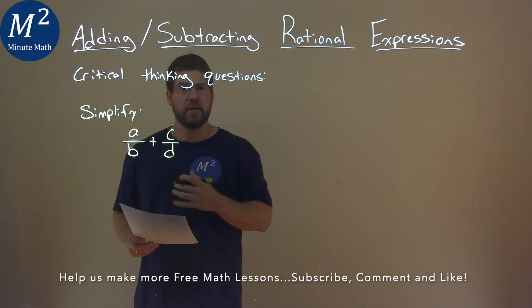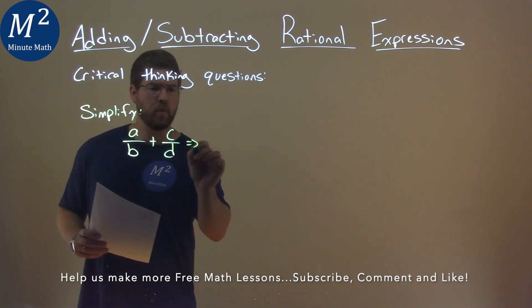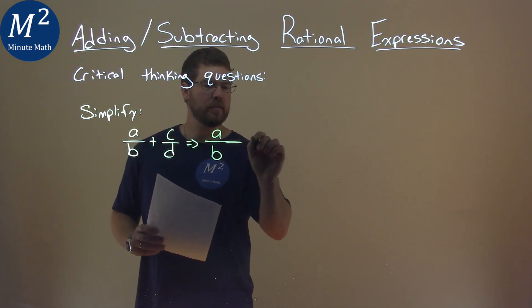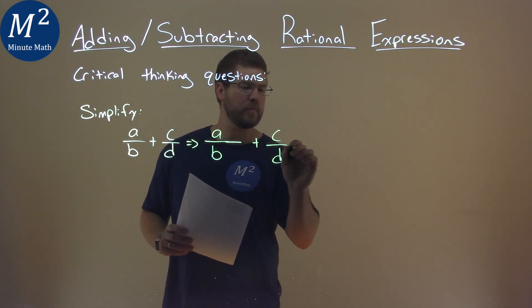To combine these fractions, we have to have the same denominator. So what I'm going to do is I'm going to rewrite this A over B with some space plus C over D with some space.